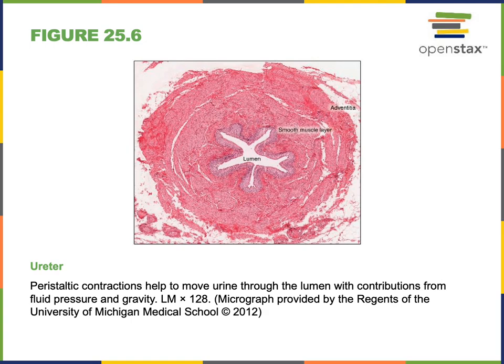Here we see the histology of a ureter. The ureter is a muscular tube that transports urine from the kidney to the urinary bladder. The smooth muscle in the wall of the ureter contracts in involuntary waves of peristalsis to propel urine into the urinary bladder. The outer layer, the adventitia, is connective tissue that stabilizes the ureter. The inner layer is a mucosa with transitional epithelium that enables stretching as the ureter fills with urine.